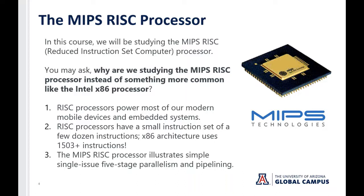A second reason we're studying MIPS is that RISC processors have a small number of instructions — just a few dozen — which are actually manageable. So you can learn MIPS assembly language, and you'll be diving into that in the first assignment. Whereas with x86 architecture, there are around 1,500 different instructions. Modern CISC processors — complex instruction processors — actually operate on what's called microcode, so they're really operating like a RISC processor, but allow for many more instructions to make assembly language programming more manageable for developers. But the RISC processor has largely prevailed over the last 30 or 40 years.